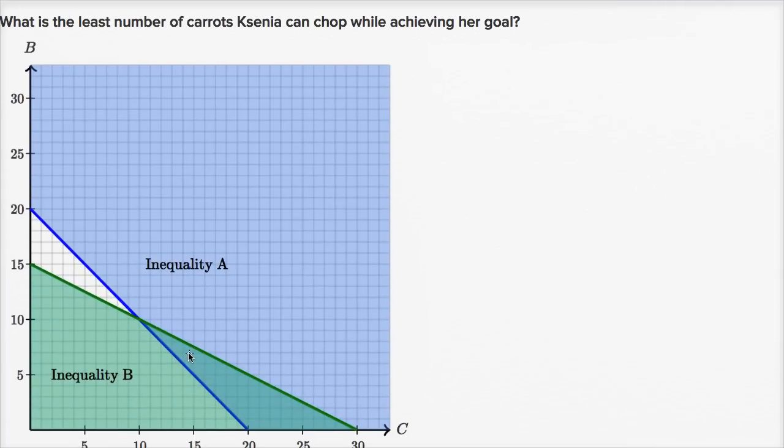And so the overlap of the two, if she's meeting both constraints, which means it's going to be all of this area right over here. This is the overlap of the two solution sets. So in this overlap, where is the least number of carrots? What is the least number of carrots Ksenia can chop while achieving her goal?